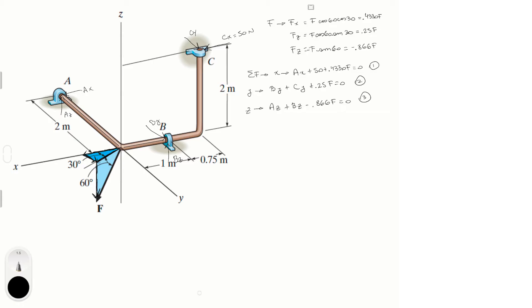We know Cx = 50, and we're trying to find F. Ideally, we want to express F in terms of Cx. It's not simple because there are many unknowns — Bz, By, Ax, and Az — so we'll keep writing moment equations and combining them until we can isolate F. There may be some trial and error in the path.